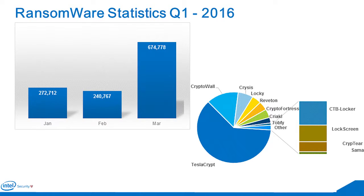There are many different types. Locky and TeslaCrypt and a number of others were very prevalent in the news at the beginning of the year. Around 1.2 to 1.3 million samples are out there.